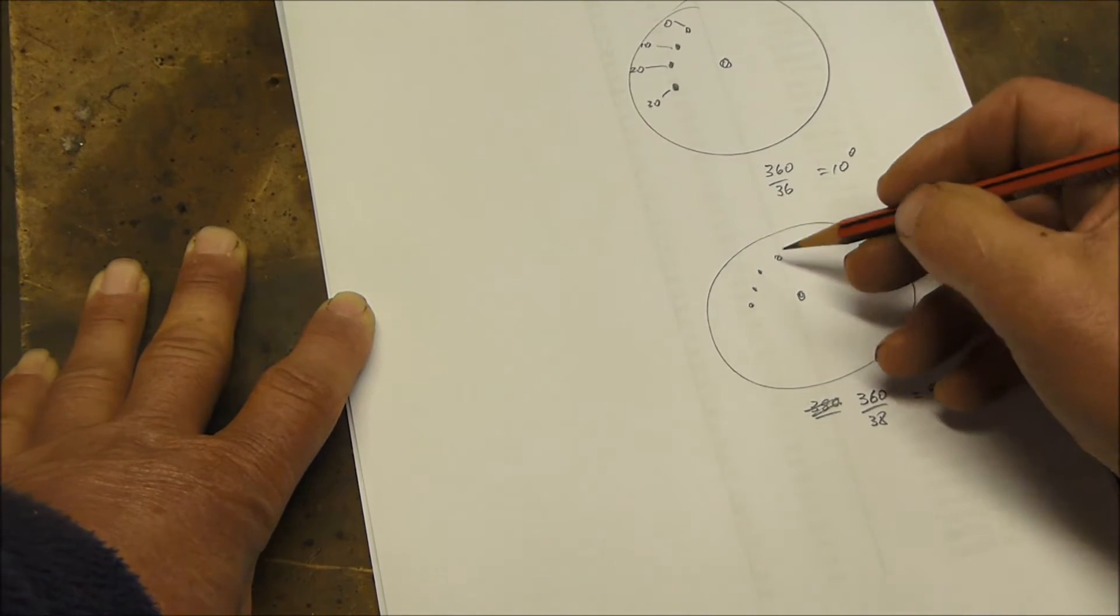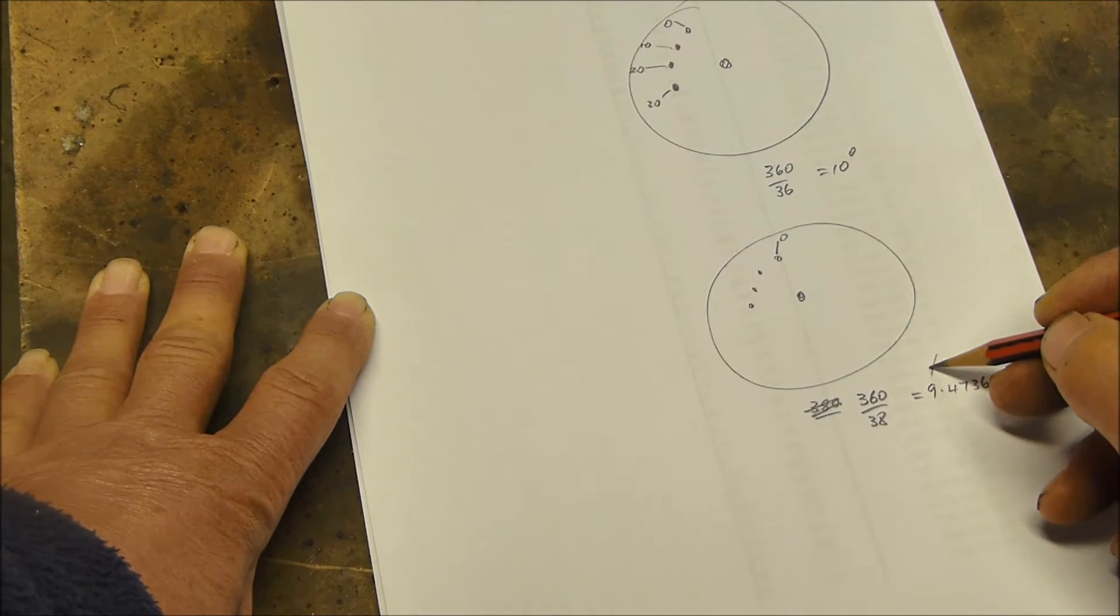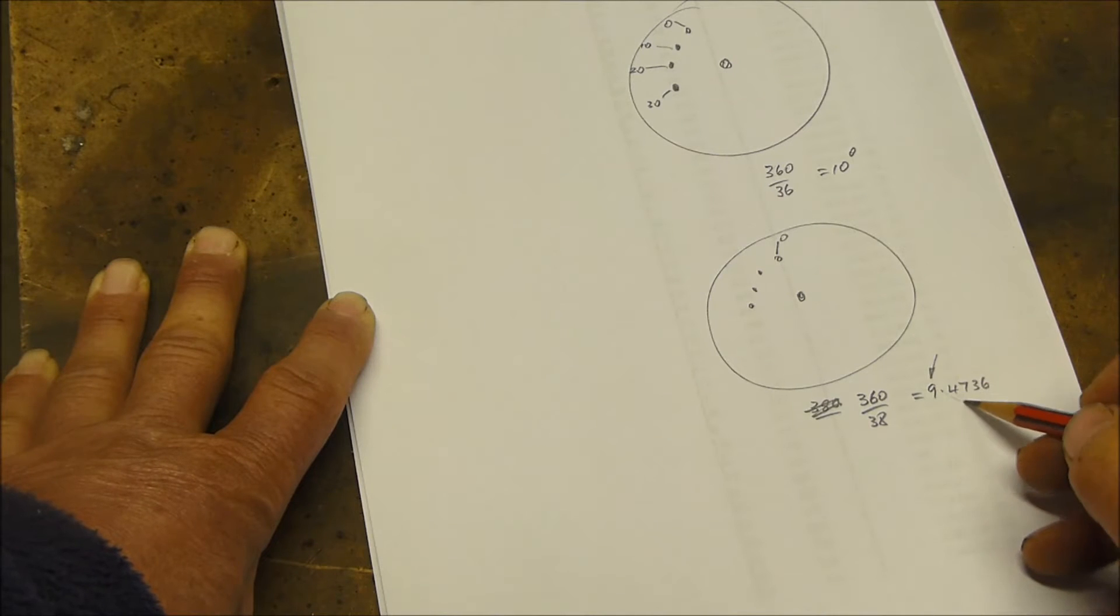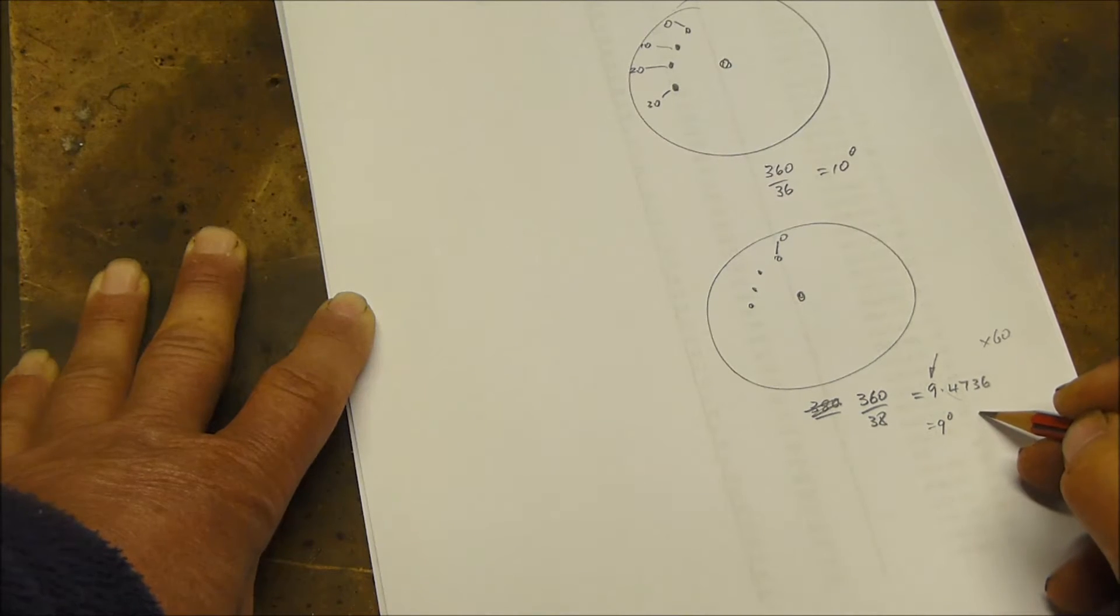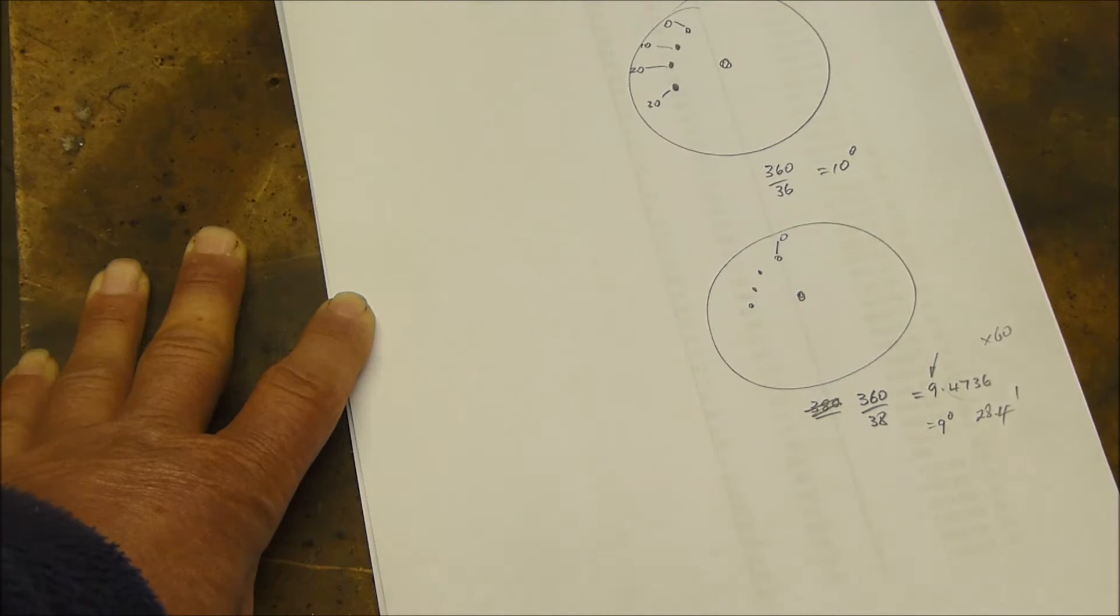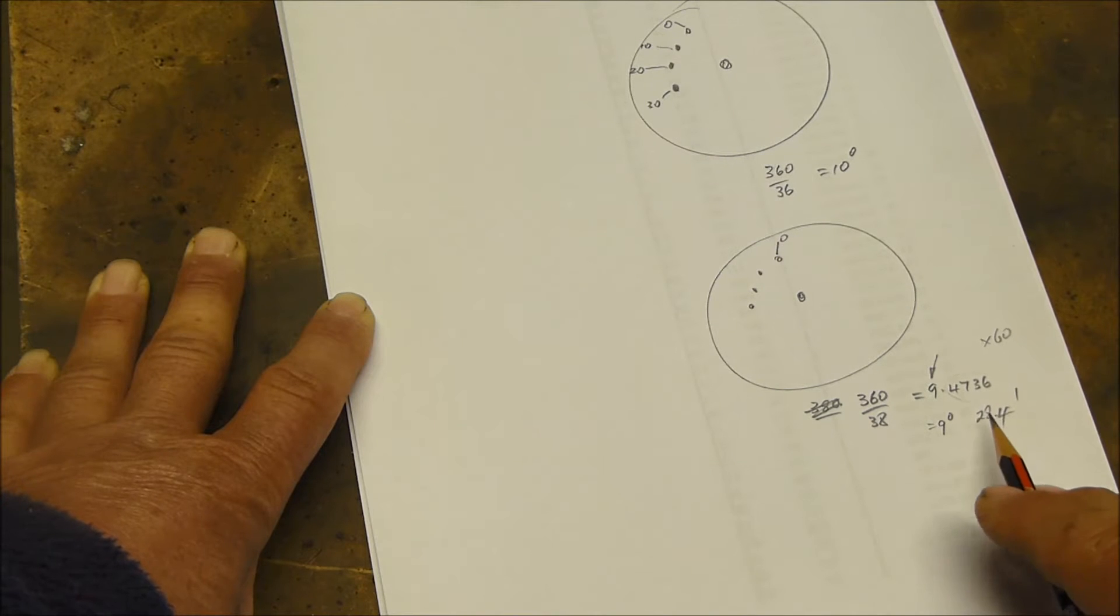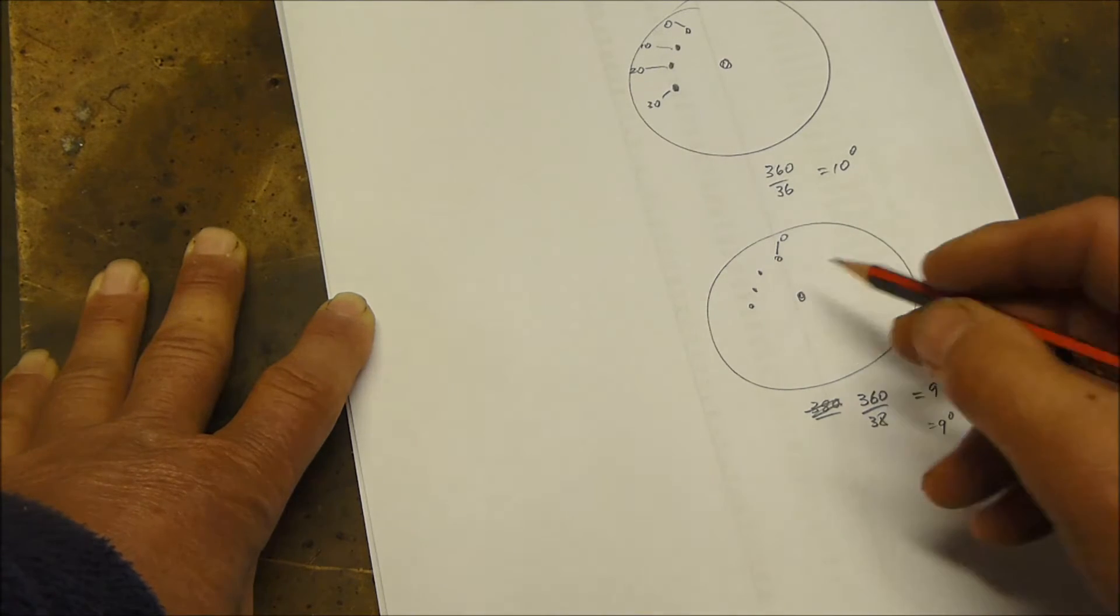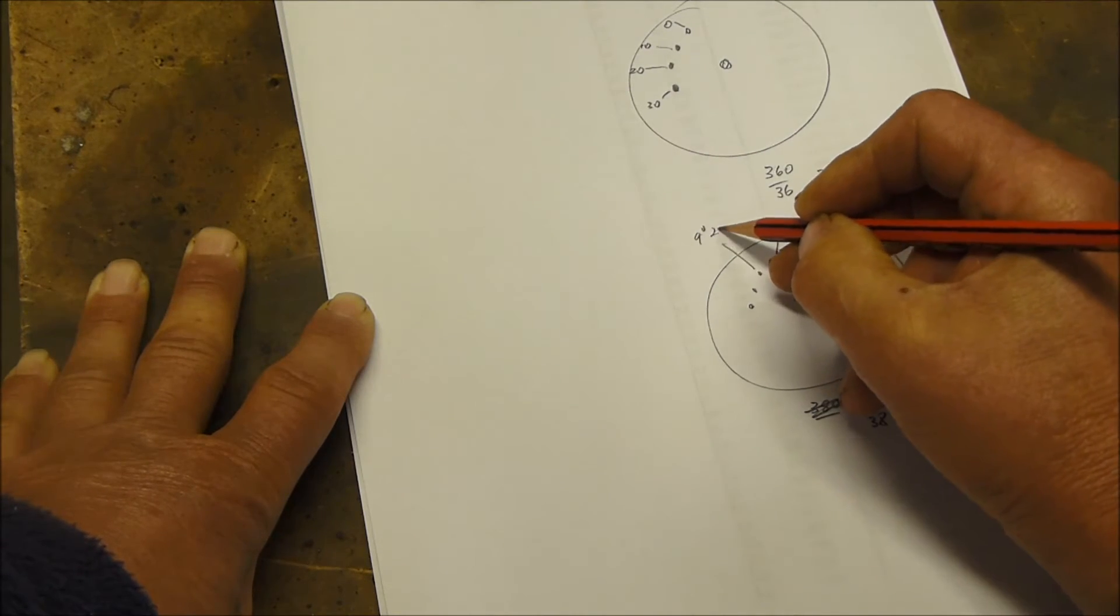So we would drill our first hole at zero, we would drill the next hole at 9 degrees, and in order to turn that into minutes of angle we've got to multiply it by 60. So that comes to 9 degrees and 28.4 from memory minutes of angle. So not only do we have to do the mental gymnastics of multiplying it by 60, but then we've got to round that down to 28,